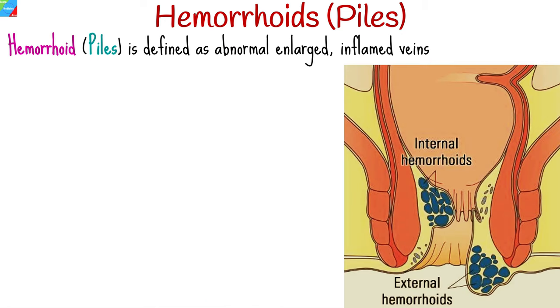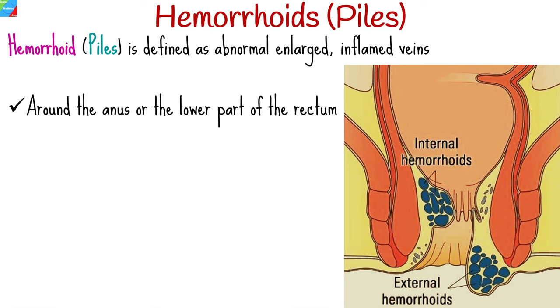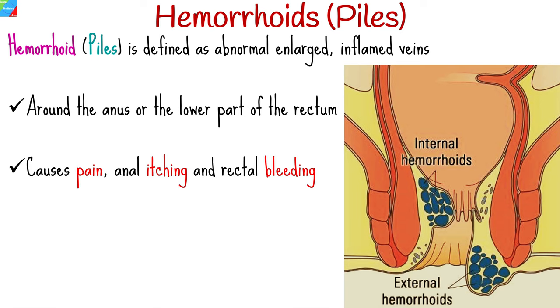Hemorrhoid, also known as piles, is defined as abnormally enlarged, inflamed veins around the anus or the lower part of the rectum, often causing pain, anal itching, and rectal bleeding.